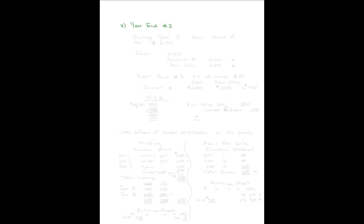Let's move on to year three. During year three, I want to sell Investment A in its entirety, and I'm going to sell it for $2,100. The entry to record that: I debit cash $2,100 and credit Investment A. I'm not specifying trading or available for sale — just that it's Investment A — and I pick up a gain or loss for the difference.